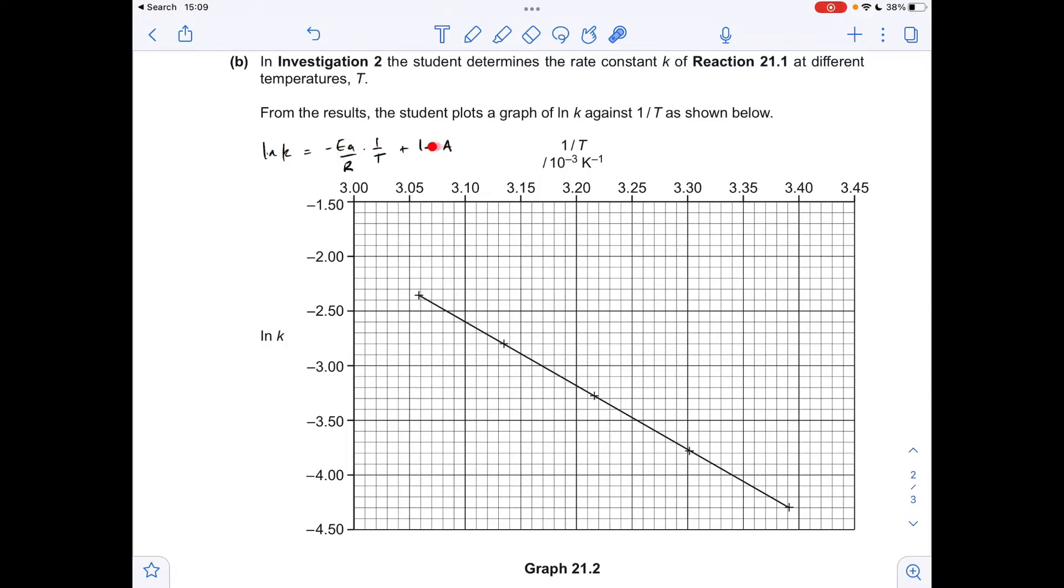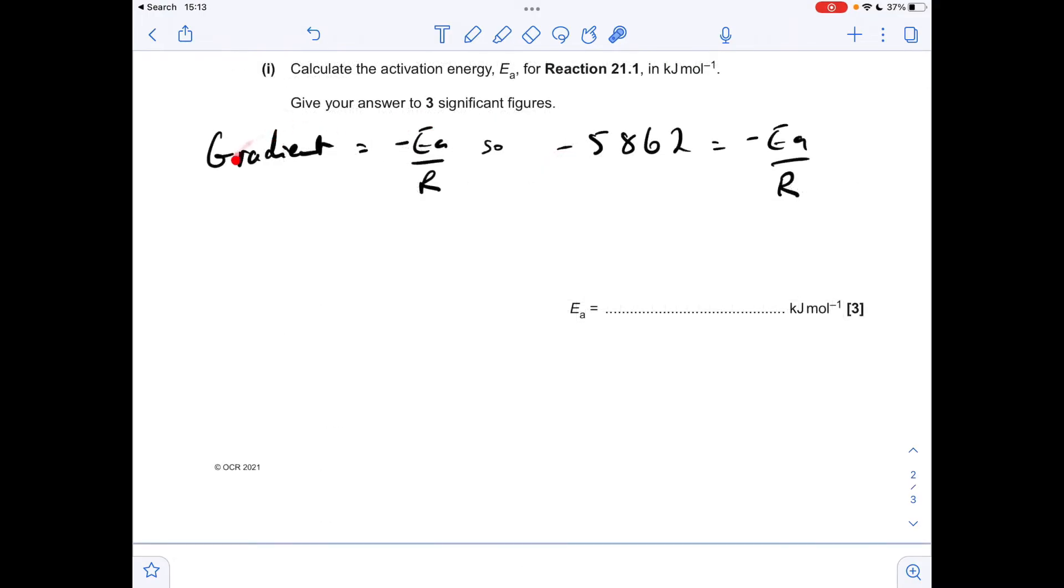So the students plotted the ln of K on the Y-axis, and 1 over T on the X-axis, and they've obviously got a straight line, because it follows a straight line equation. And the gradient of the line is equal to minus EA over R. So you can see I've calculated my change in Y and my change in X. Just be careful that you remember to include the 10 to the minus 3. All of these 1 over T's are times 10 to the minus 3. So that might have caught some people out there.